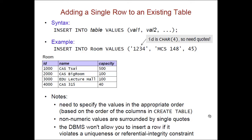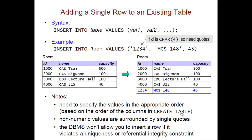And then finally it's worth noting that the DBMS is going to check our uniqueness constraints and our referential integrity constraints and it won't let us insert a row if it violates one of those constraints. But in this case I'm not violating and so I end up with a new row in my room table.